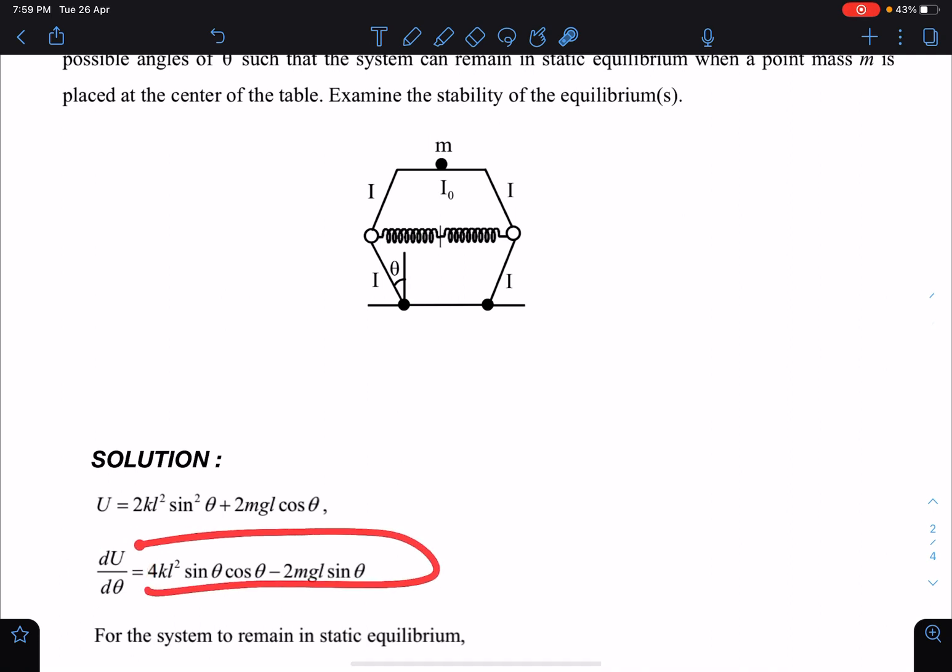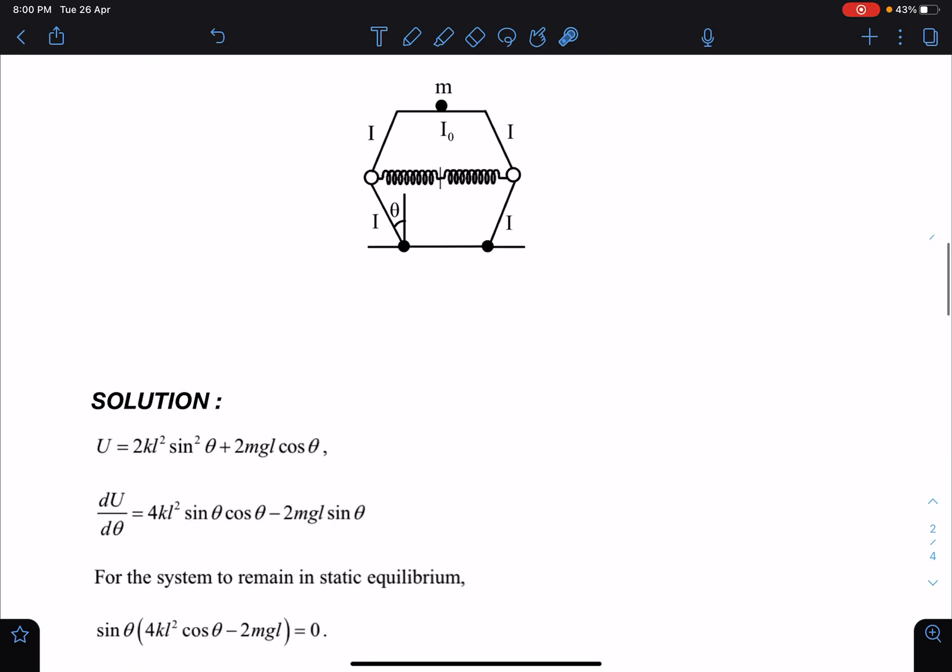I am going to get this expression. Simply just differentiate this like we do for equilibrium. And you can see here I am getting 4kl² sin θ cos θ minus 2mg l sin θ. When I substitute this equal to 0, sin θ I can take common.